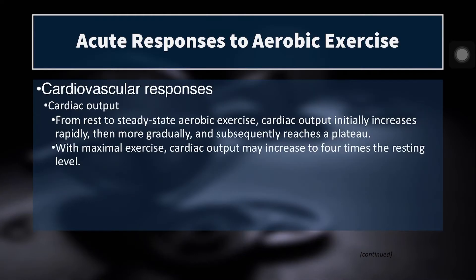During exercise, cardiac output will increase dramatically from resting levels, but then eventually it will plateau. With maximal exercise, cardiac output may increase up to four times the resting level — so you could be pumping as much as four times, maybe even more, as much blood as you do during rest.